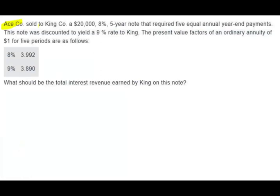Ace Company sold to King Co. a $20,000, 8%, 5-year note that required five equal annual year-end payments. So here's what happened. We have two companies, Ace and King. Ace sold the note to King. Obviously they sold the note to King, King paid a certain amount of money for the note and King would receive the future payments of this note. So this is basically what happened.